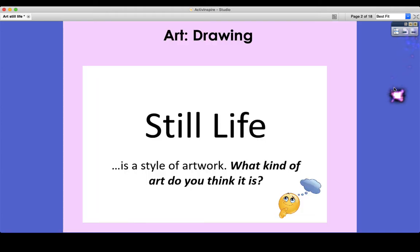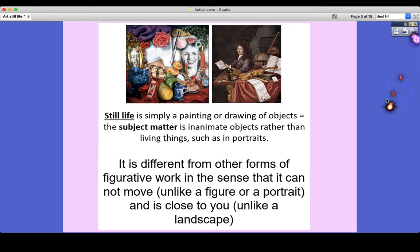We were starting our work on still life before the schools had to close. What kind of art do you think still life is? Still life is simply a painting or drawing of objects where the subject matter is inanimate objects rather than living things such as in portraits. So the objects of the painting or drawing can't move.